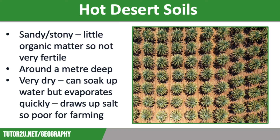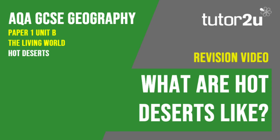However, in some desert regions irrigation has been used to make land productive for agriculture — for example, the Thar Desert in India and Pakistan. That concludes this Tutor2You revision video focusing on the characteristics of hot deserts. Thank you for watching.